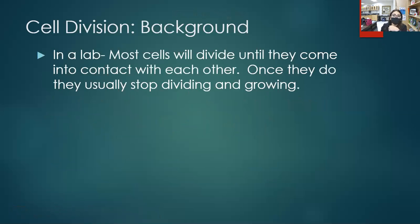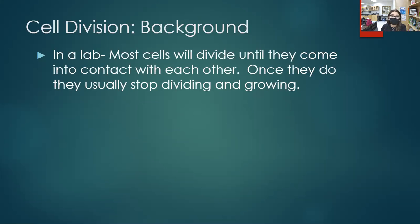A little background: what we've been discussing all week is the cell cycle. We now know, using our little hand gestures, that when we go through the cell cycle we have three main stages: interphase, mitosis, and cytokinesis. We know each individual subphase — in interphase we have G1, S, and G2, and in mitosis we have PMAP.